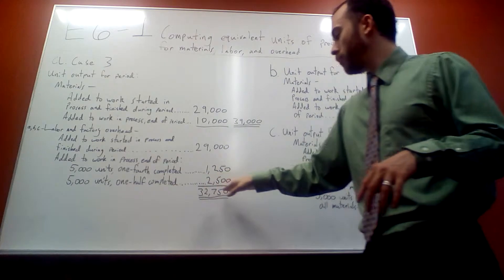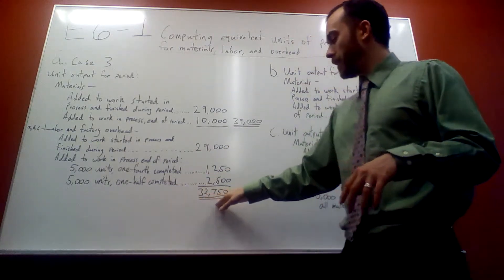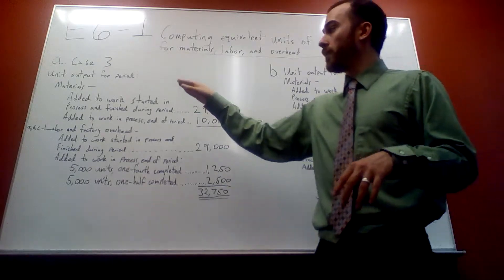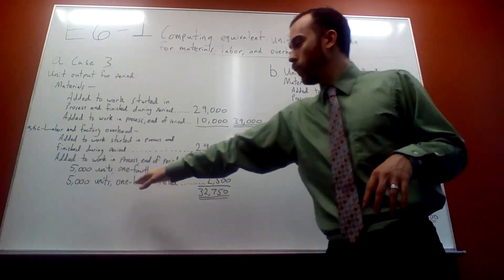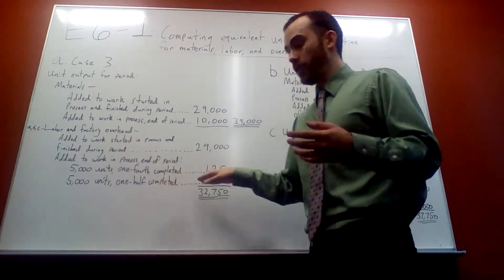Which add those together gives you 32,750. So labor and overhead go exactly by what it says, how much it's completed is exactly what you're going to use.